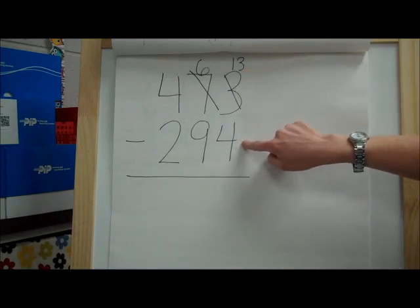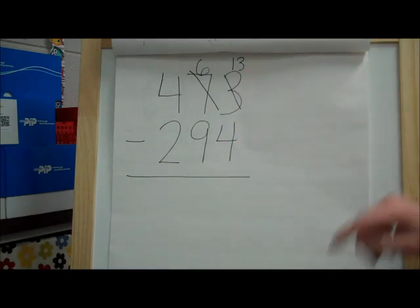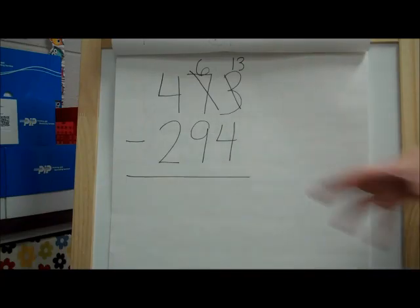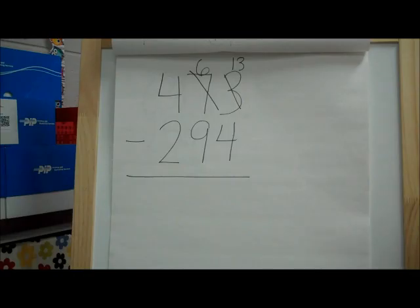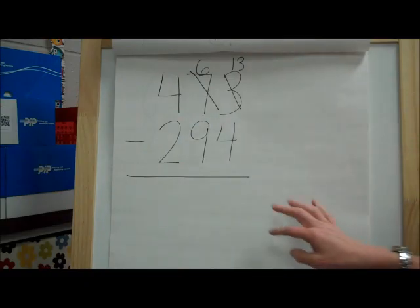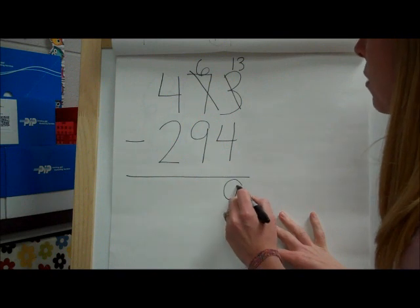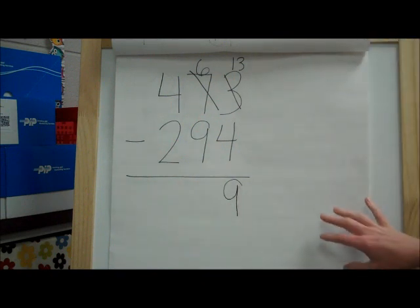So he's going to become 6 because he's going to give up a group of 10. And then this 3 is going to become 13 because we took that group of 10. We added the 10 to the 3 to make 13. So now we're going to do 13 minus 4.